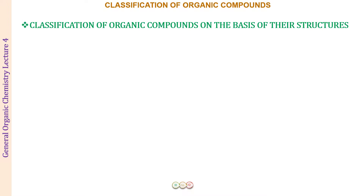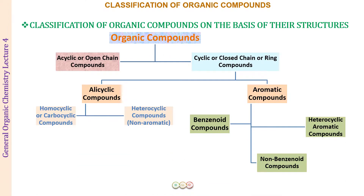The first classification we do is on the basis of the structure of the organic compounds. Here, the organic compounds are broadly classified into two categories: the acyclic compounds or the cyclic compounds. The acyclic compounds are also called open chain compounds, whereas the cyclic compounds are also called closed chain or ring compounds.